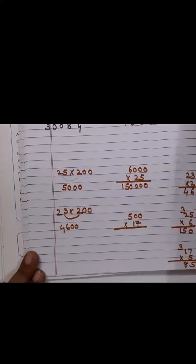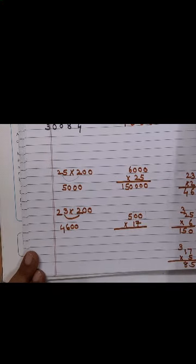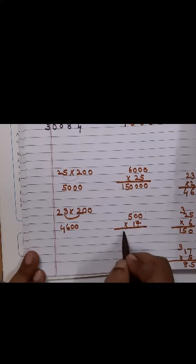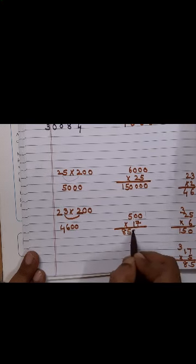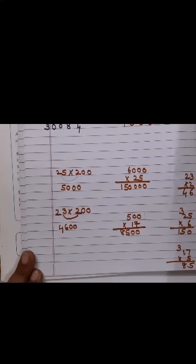If you get confused now children, just do this. Just put like this a box so that you are not confused. You can use your pencil. So 17 into 5, that is 85, and then just put 2 zeros. Got it?